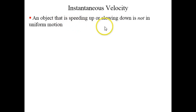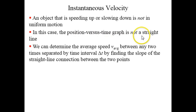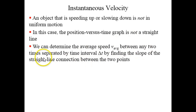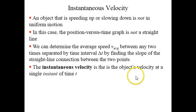If an object is speeding up or slowing down, that's not uniform motion, and so the position versus time graph is not a straight line. We can still figure out average speed between any two points in time by finding the slope of the straight line connecting two points on the position versus time graph.